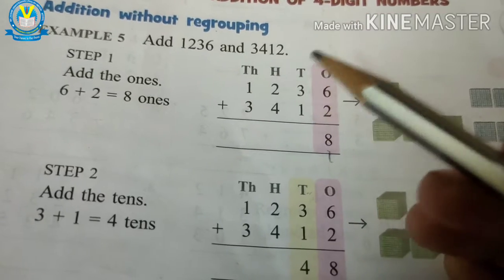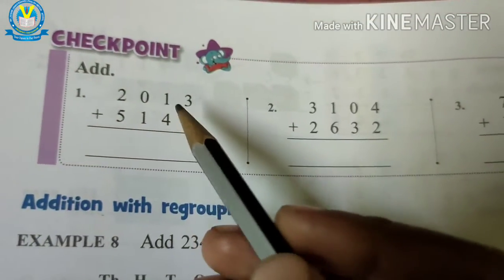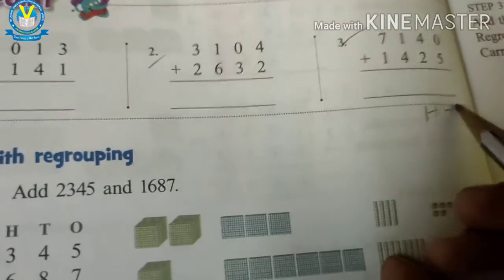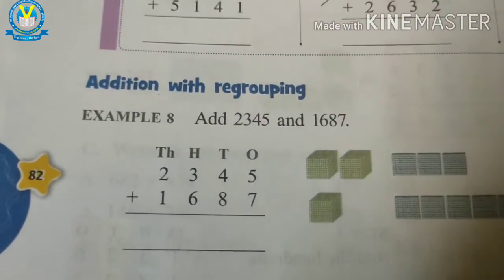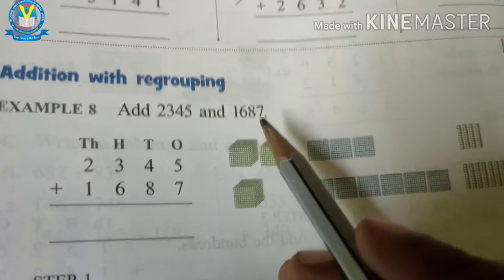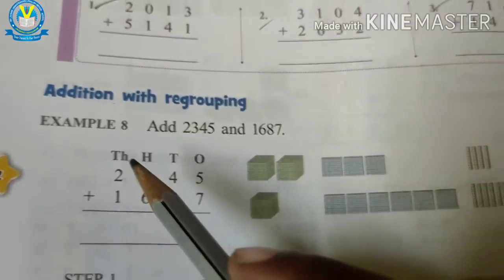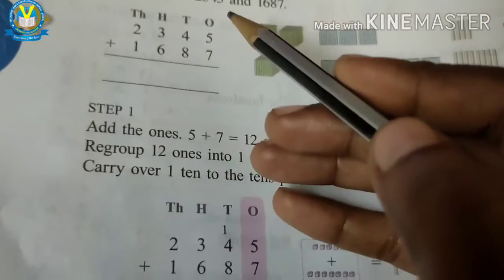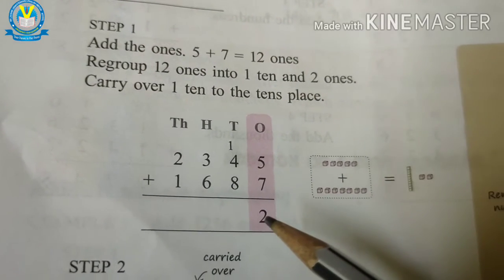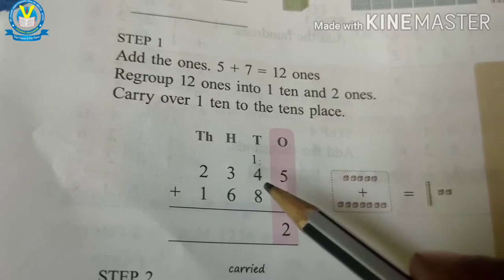This is on page number eighty-two, as homework. Next: addition with regrouping. Here, add 2345 and 1687. First, write the place values: ones, tens, hundreds, thousands. First step — adding ones place values: five plus seven equals twelve, so write two in the ones place and carry one over to the tens place.